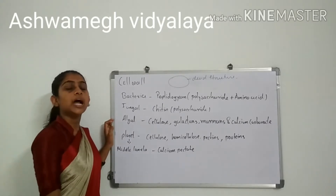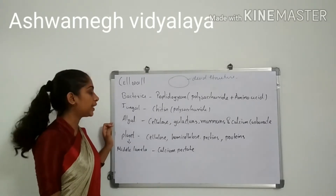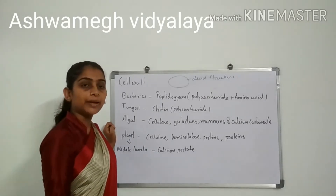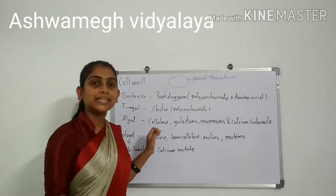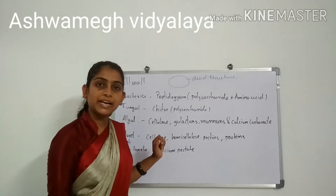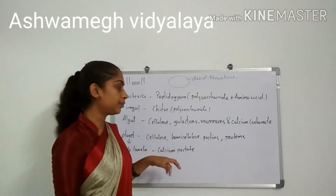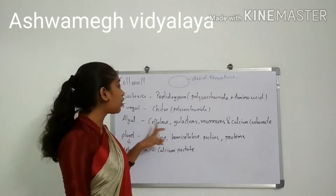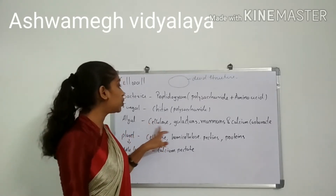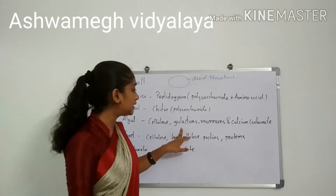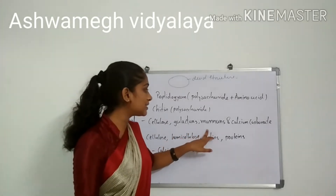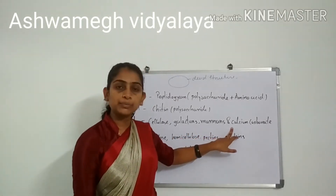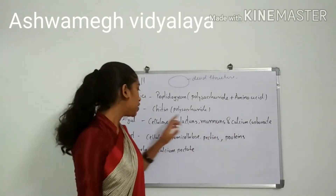Now we discuss about algae. Algal cell wall is made up of cellulose, galactans, manans, and calcium carbonate.